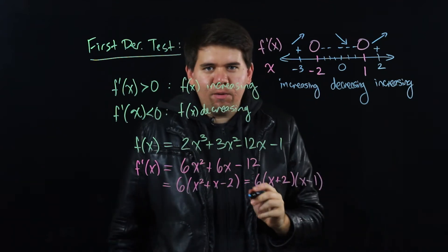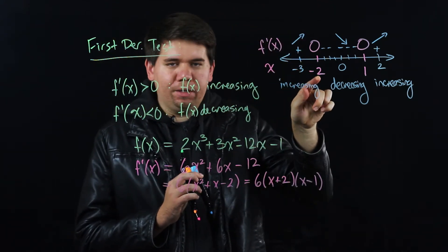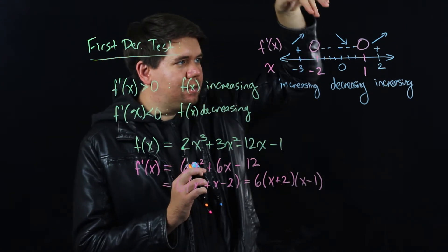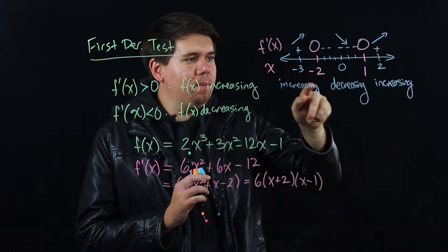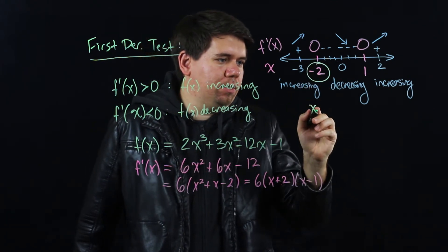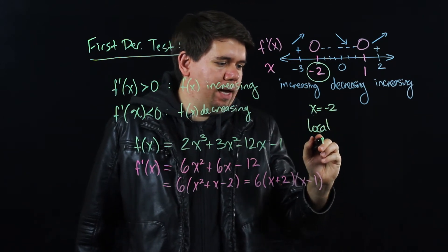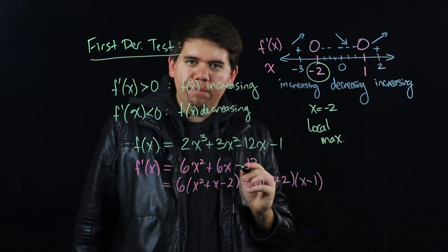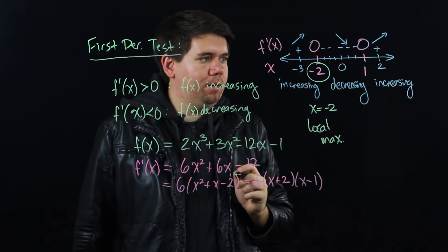But now let's think what's going on here. If my function was increasing before I get to -2, and it's decreasing after I get past -2, what must -2 be? Well, x = -2 must be at least a local maximum, right? It was getting bigger and then it's getting smaller, so that must be a local maximum.